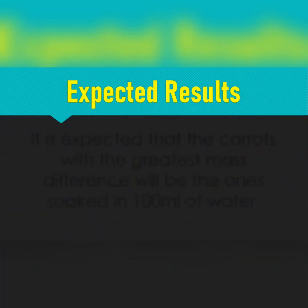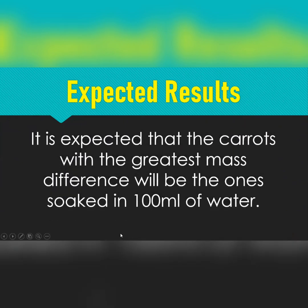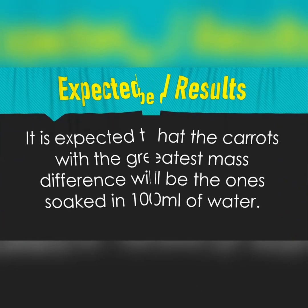Expected results are based on your hypothesis — look at what you think the answer is and ask what do I expect to observe. It is expected that the carrots with the greatest mass difference will be those soaked in 100 ml of water, and you'll see shortly what we mean by mass difference.